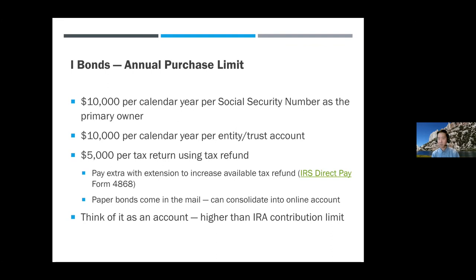If you normally only get a $2,000 refund but want to buy $5,000 worth, there's a trick: file an extension and pay extra with it. Money paid with an automatic extension counts toward the previous year, increasing your refund. Your $2,000 refund becomes a $5,000 refund, and you can use that to buy I bonds. The IRS processes the refund, uses $5,000 to buy I bonds, and puts the remaining money in your bank account. They send the money to the I bonds department, which processes the purchase, prints paper bonds, and mails them to you.